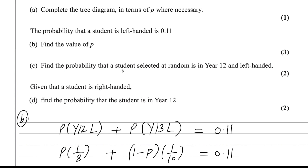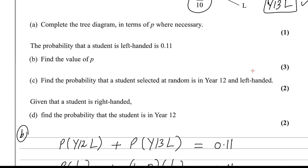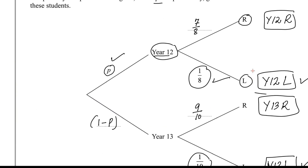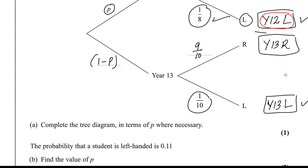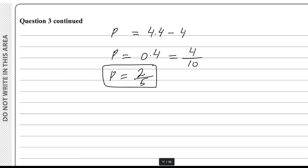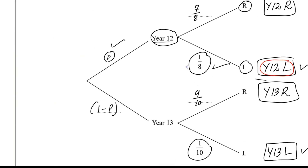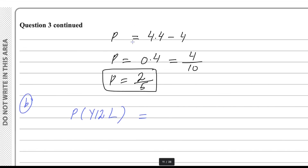For part C, find the probability that the student selected at random is in Year 12 and left-handed. The outcome is Year 12 with left hand. The probability is P × (1/8). We already found P = 2/5, so it is 2/5 × 1/8 = 2/40 = 1/20.